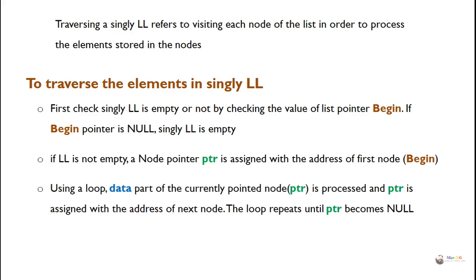If the linked list is not empty, a node pointer ptr is assigned with the address of the first node, begin. Using a loop, the data part of the currently pointed node ptr is processed, and ptr is assigned with the address of the next node. The loop repeats until ptr becomes null.